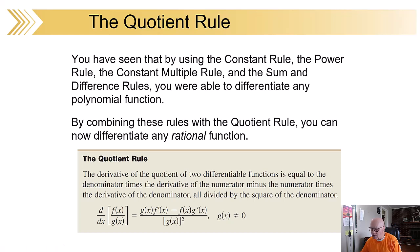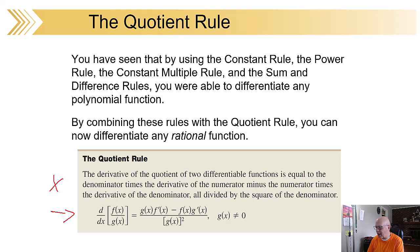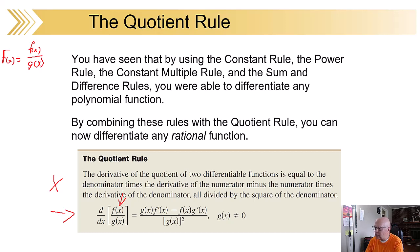Before I get started, let me make sure the pen is working — check number one, check number two, we're good. Here's the quotient rule and my shortened version of it. Of course, the denominator can't be zero as always. Let's suppose that we had capital F of x equals f of x over g of x. We'll work with those. So if we want F prime of x, where capital F of x had f of x and g of x as parts of it, here's how it goes.